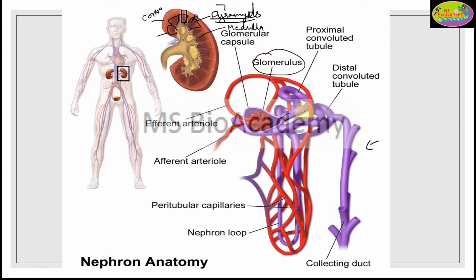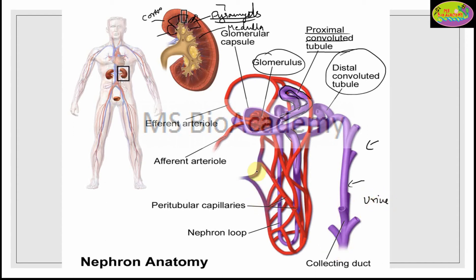From the Bowman's capsule, a tubule comes out. Since it is proximal to the Bowman's capsule, it is called the proximal convoluted tubule (PCT). The PCT then goes down and merges to form the loop of Henle, which then comes back up to form the distal convoluted tubule (DCT). The DCT then discharges its filtrate (urine) into the collecting duct. Absorption and secretion of ions, water, and glucose take place along these tubule regions.